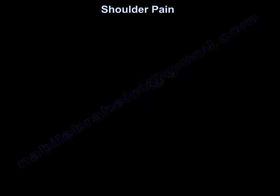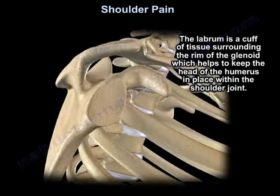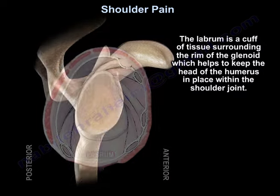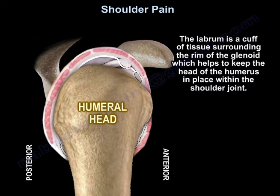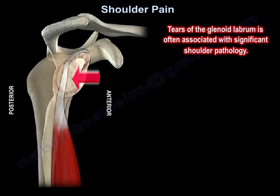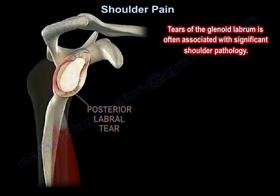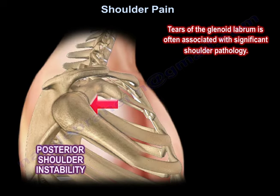The labrum is a cuff of tissue surrounding the rim of the glenoid, which helps to keep the head of the humerus in place within the shoulder joint. Tears of the labrum are often associated with significant shoulder pathology.